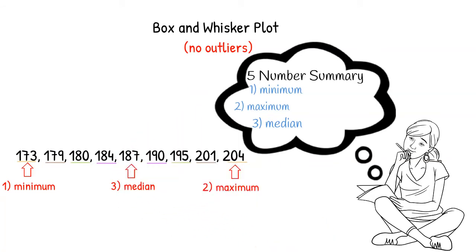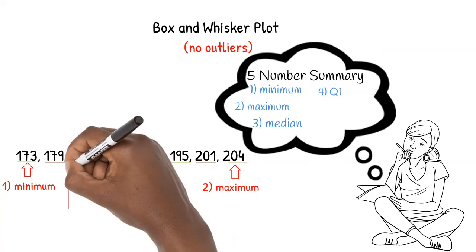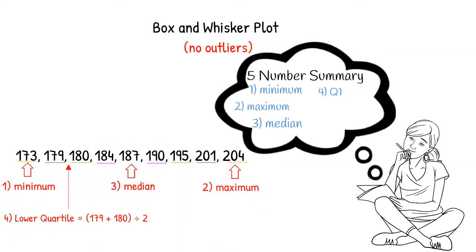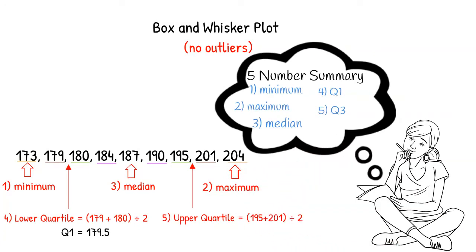Our next step was to find the lower quartile, also known as Q1. To do this, we found the median of the lower half of the values, ignoring the median. Since there are two numbers in the middle of the lower half, the lower quartile is the average of these two numbers. The lower quartile, Q1, is 179.5. We then found the upper quartile, also known as Q3. Since there are two numbers in the middle of the upper half, the upper quartile is the average of these two numbers. The upper quartile, Q3, is 198.